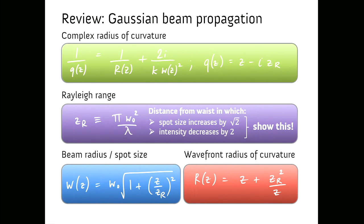Going through the details of deriving W(z) and R(z) from q(z), we find the waist starts off flat then gets broader, and the wavefront radius of curvature is quite simple. For small z, close to the waist, R(z) diverges, describing the plane wave nature near the waist. For z much larger than z_R, that term vanishes and R(z) just equals the distance from the waist — exactly like a spherical wave.